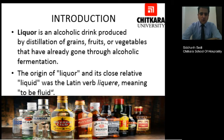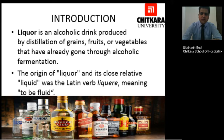Liquor happens to be an alcoholic drink which is produced by the distillation of grains, fruits or vegetables that have already gone through alcoholic fermentation. The origin of the word liquor comes from a Latin word which means 'to be fluid.' In the photograph below you can see various kinds of liquors which are famous in the market. Liquors are made by the method of distillation — there are two basic methods: pot-still and patent-still method.